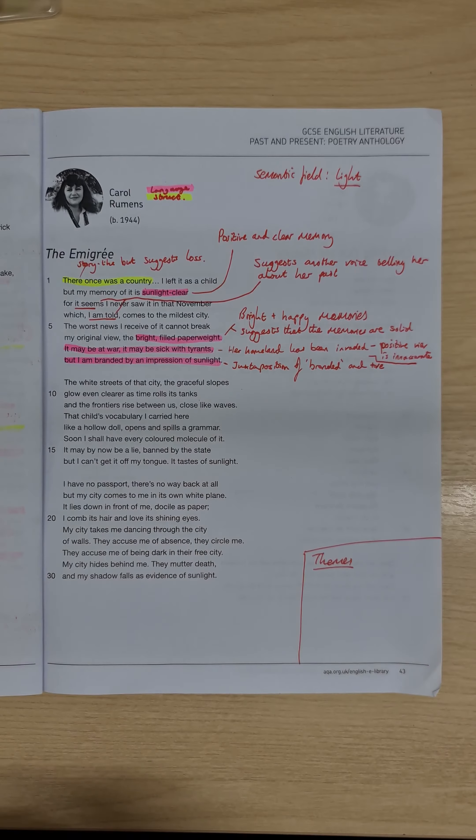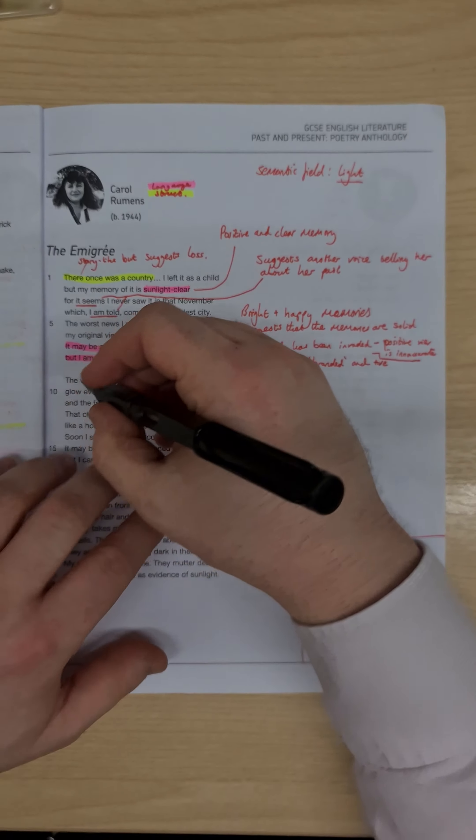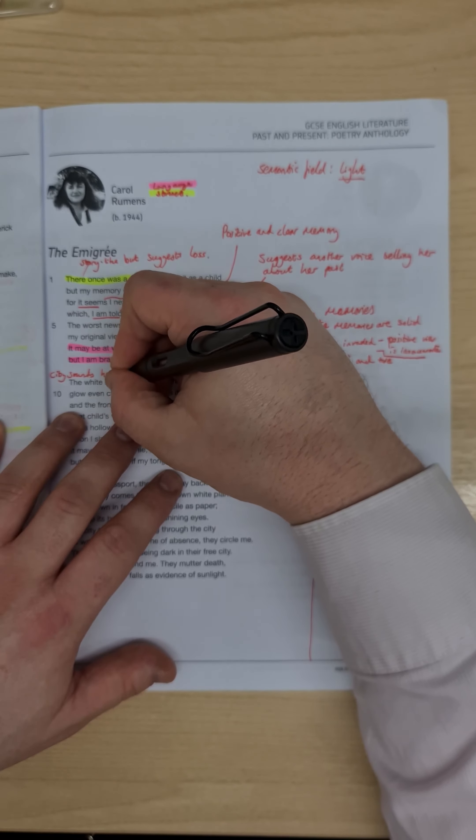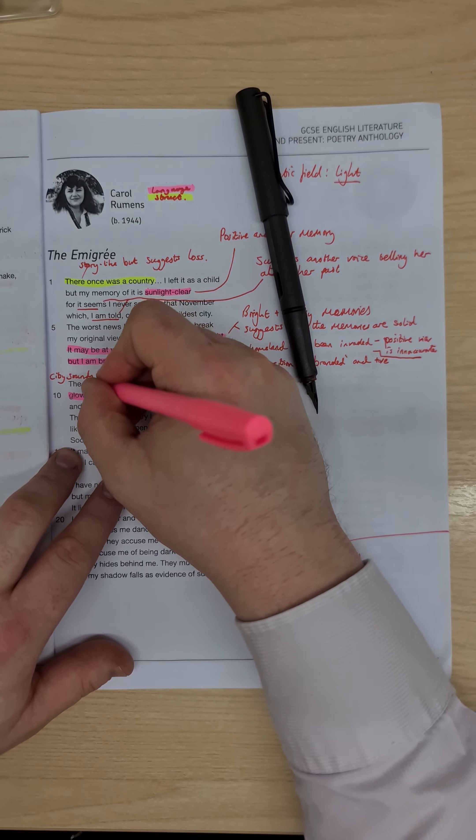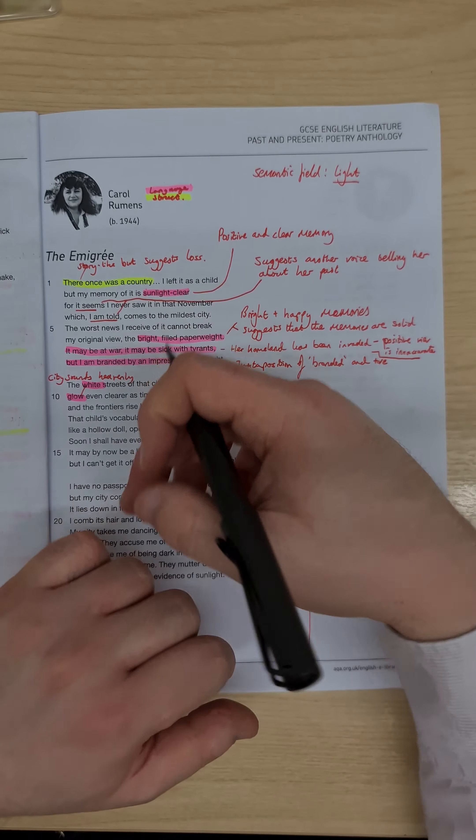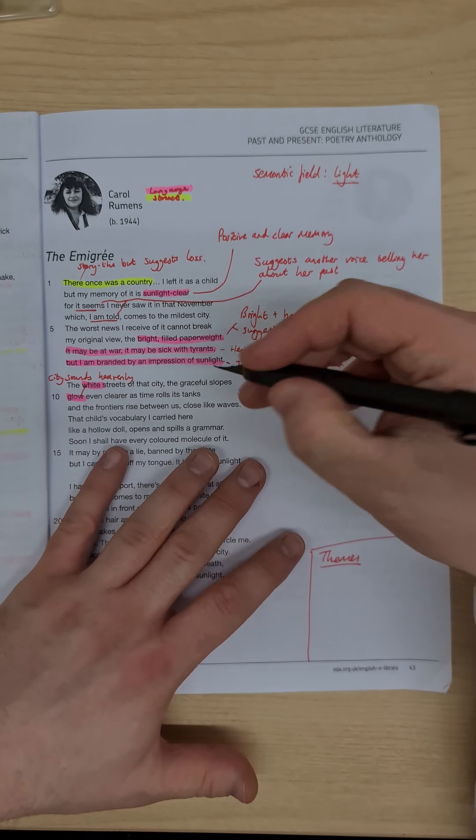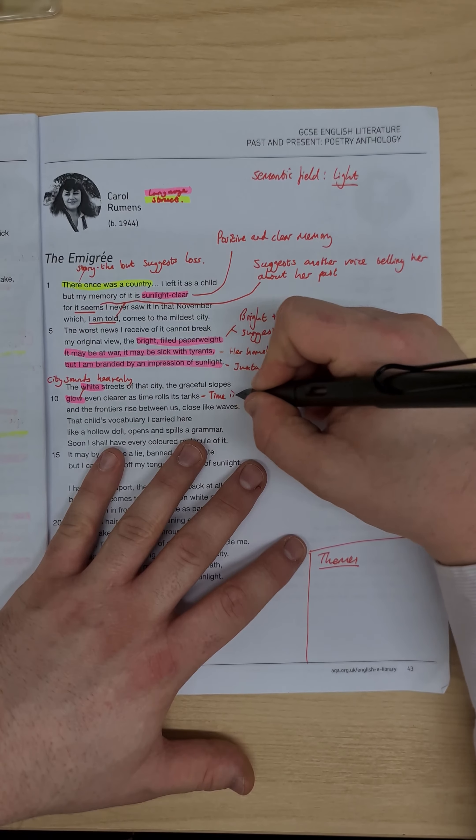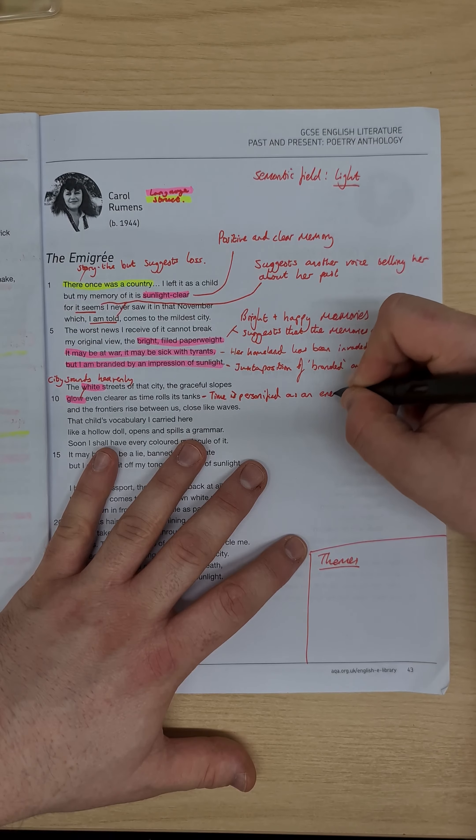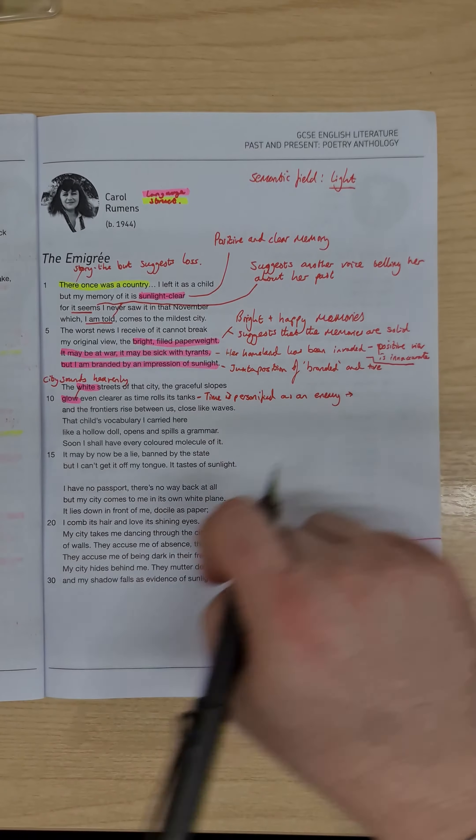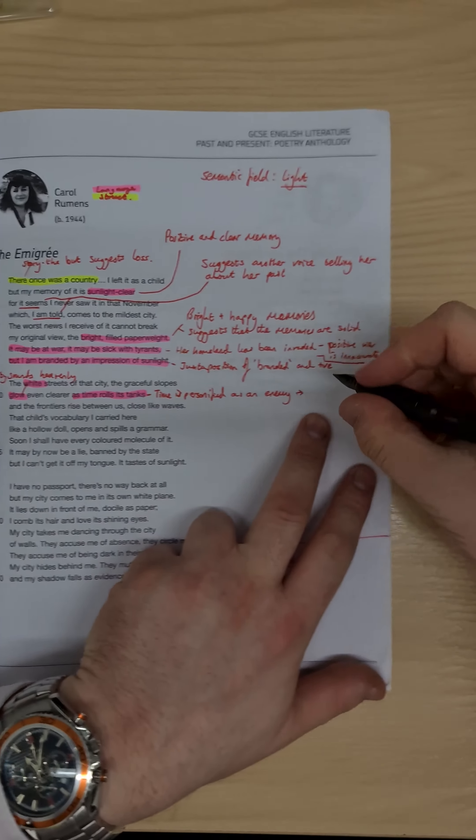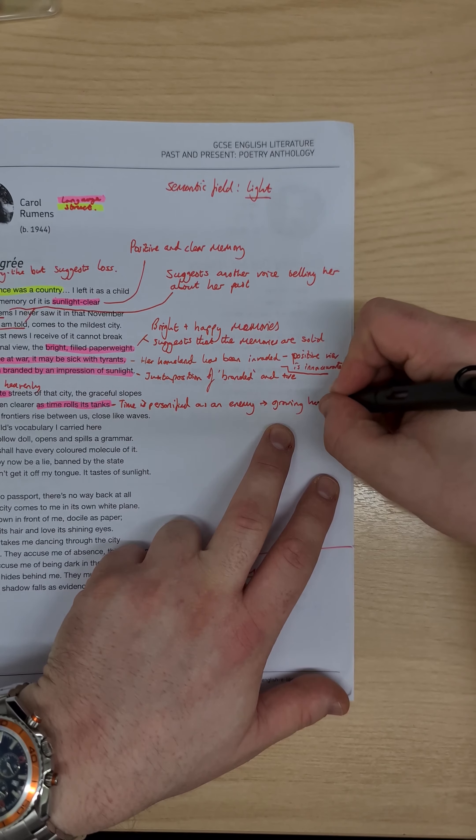the next stanza there, the white streets of that city, the graceful slopes glow. And we have this idea now where the city suddenly sounds heavenly. So the whites, the white streets that glow and even clearer as time rolls its tanks. And now we have this that time is personified as an enemy. That to me suggests that if she is so against this idea of time that time as time rolls its tanks that she doesn't like the idea of time passing, it suggests to me that growing up has been hard work for her.